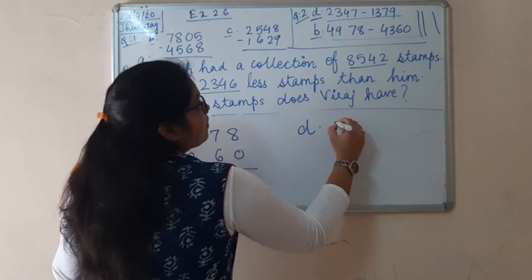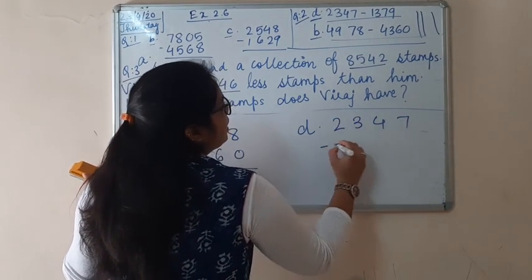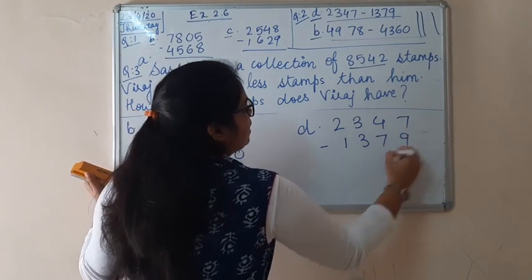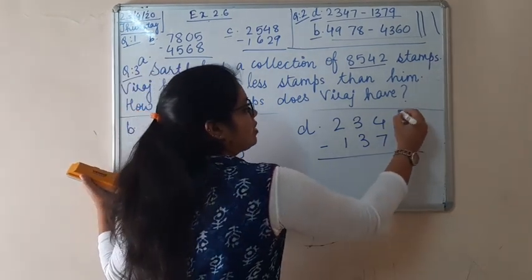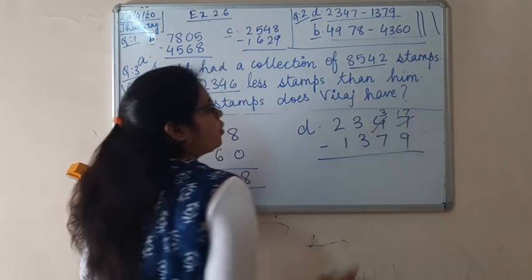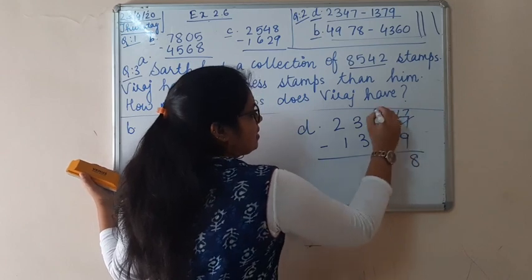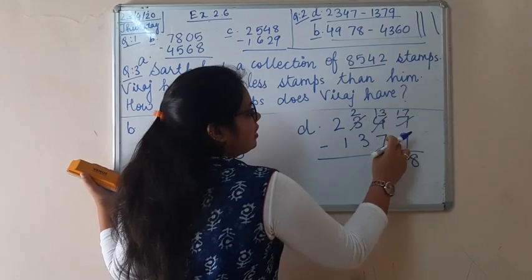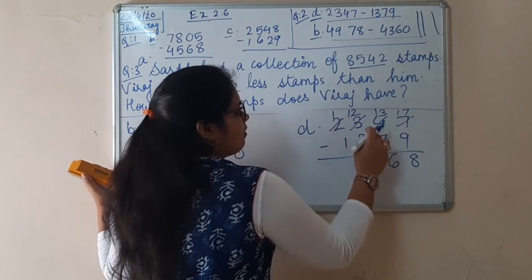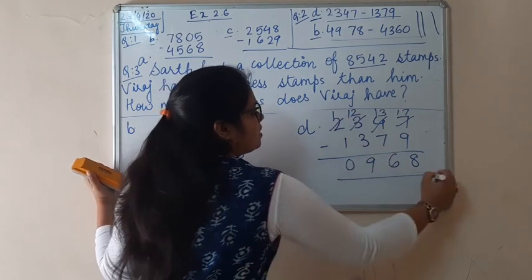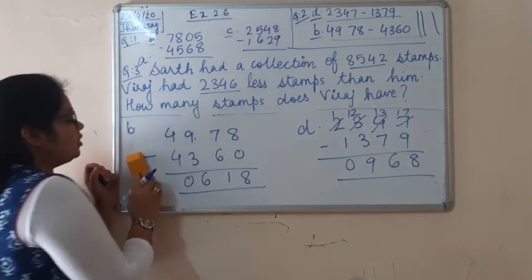Let's see question D: 2,347 minus 1,379. It is not possible to subtract 9 from 7, so let's borrow 1 from 4 — it becomes 17. 17 minus 9 is 8. 3 minus 7 is not possible, so 13 minus 7 is 6. 2 minus 3 is not possible, so 12 minus 3 is 9 and 0. Please write very neatly and tidy in your notebook after arrangement.